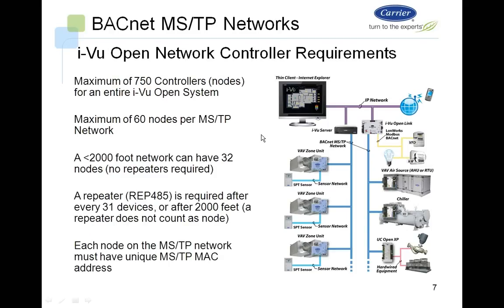In iView Open network controller requirements, the maximum number of controllers that can be installed in an iView Open system is 750. On a given MSTP network, you can have a maximum of 32 nodes on a segment less than 2,000 feet without requiring any repeaters. Once you exceed 2,000 feet, you need a repeater, or you need a repeater after 31 devices. Each node on an MSTP network must have a unique MSTP MAC address.